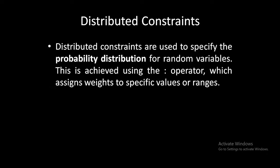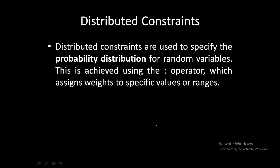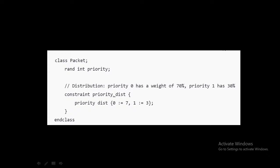In today's session, let us see distributed constraints in SystemVerilog. Distributed constraints are used to specify the probability distribution for random variables. We are going to give the probability of occurrence of a particular value in a constraint. For example, if we have a variable called priority, which is of int type and declared as rand — any variable to get randomized should be declared with the rand keyword.